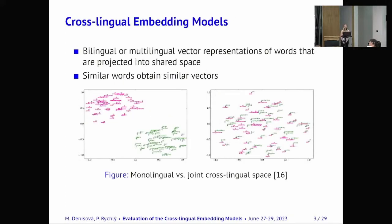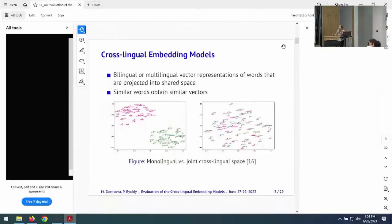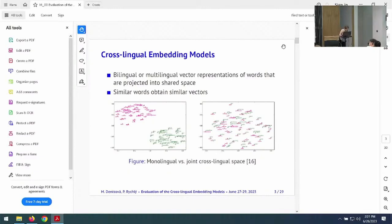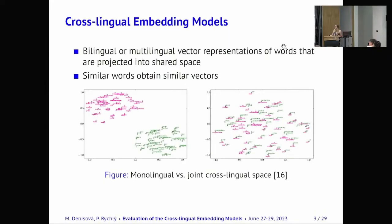So what cross-lingual embedding models are, they are bilingual or multilingual vector representations of these words. We can see on this picture these are two separate monolingual language models and what cross-lingual embedding models does during the training, they find an alignment matrix, so they align these two models into a shared space where similar words obtain similar vectors.